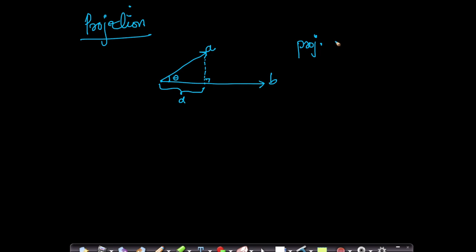The projection of vector a onto vector b is geometrically this distance d. What is d? If the length of this is a and this angle is theta, we know that d is a cos theta.